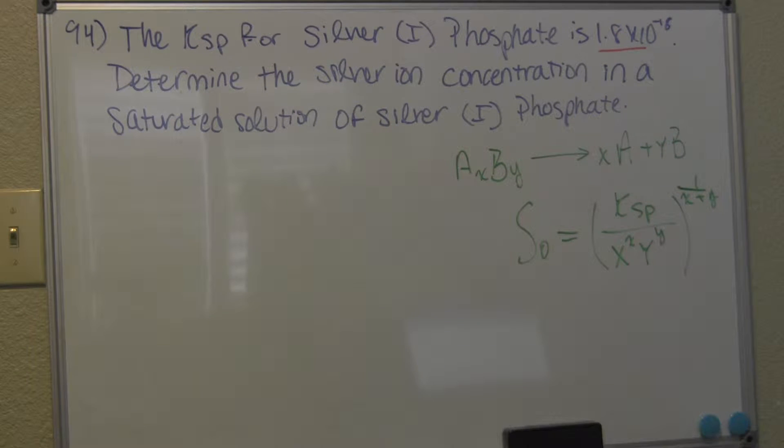Hey guys, I'm Daniel. I'm going to be showing you how to determine a silver ion concentration when given a certain Ksp. So the question we have here is, the Ksp for silver (I) phosphate is 1.8 times 10 to the negative 18. Determine the silver ion concentration in a saturated solution of silver (I) phosphate.